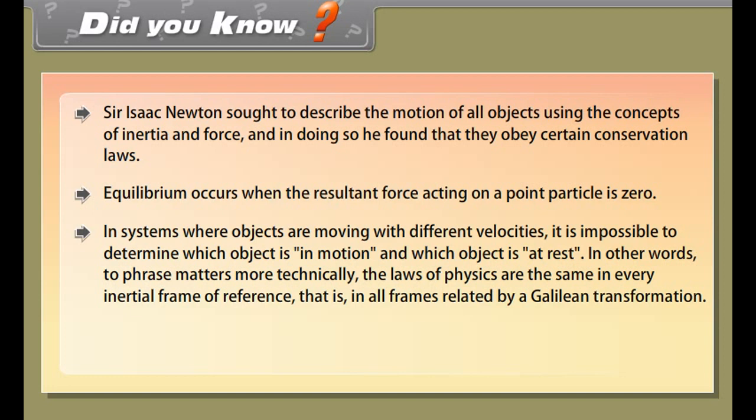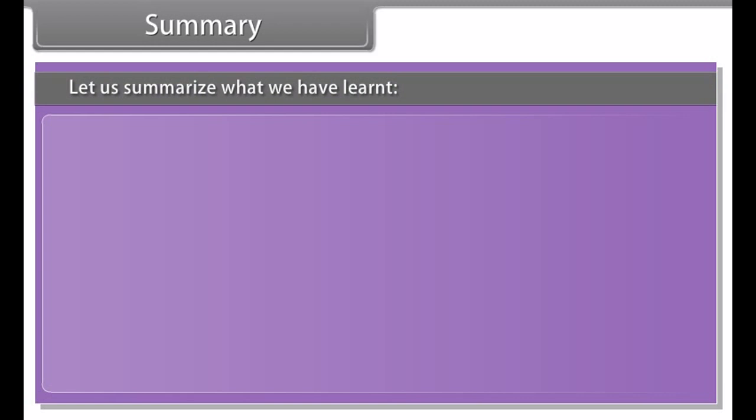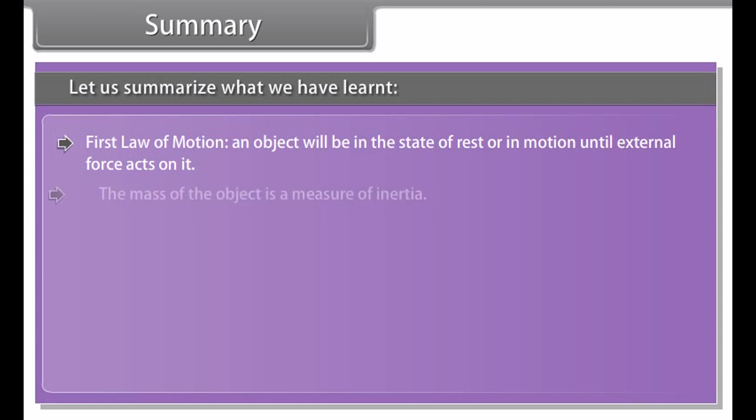Where MAUA plus MBUB is the total momentum before collision and MAVA plus MBVB is the total momentum after collision. The sum of the momenta of the two objects before collision is equal to the sum of the momenta after the collision when no external unbalanced force acts on it.